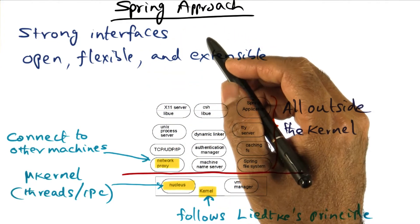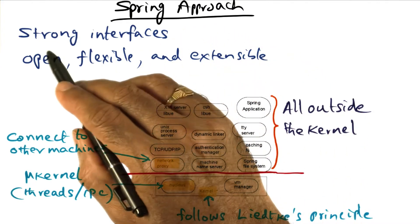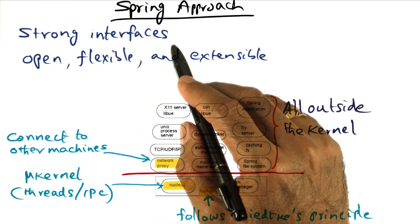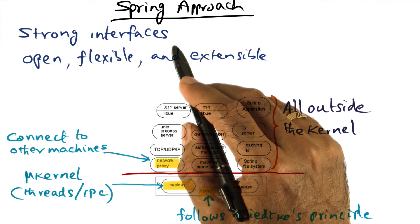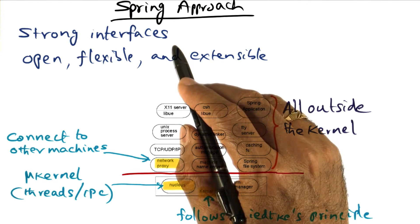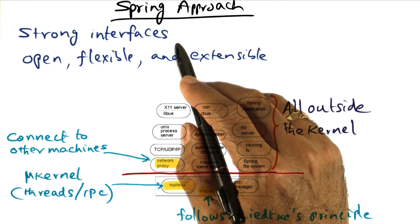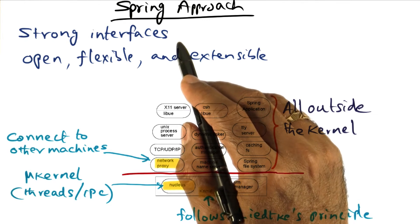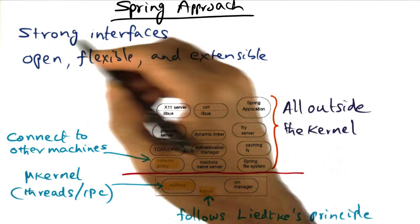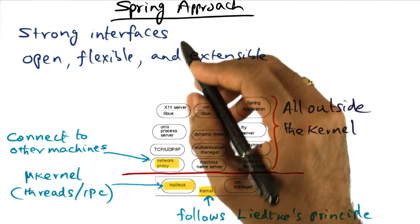The Spring approach to building an operating system is to adopt strong interfaces for each subsystem. What that means is the only thing that's exposed outside a subsystem is what services are provided by that subsystem, but not how. In other words, the how part of it can be changed at any time, so long as the external interface remains unchanged. That is what is meant by strong interfaces.